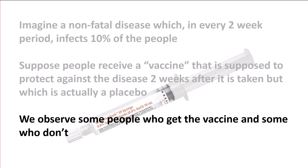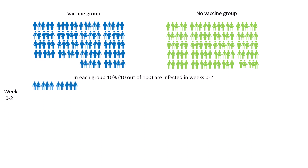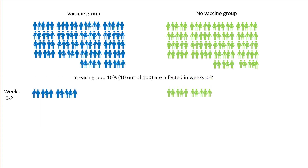We're going to observe some people who get the vaccine and some who don't. Here are 100 people who get the vaccine and 100 who don't. We know that in each group, 10% — that's 10 out of 100 — are going to be infected in the first two weeks. So 10 out of 100 are infected in the vaccine group and 10 out of 100 in the no-vaccine group, because it's a placebo and it doesn't make any difference.